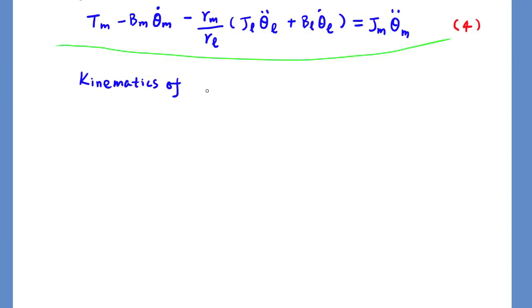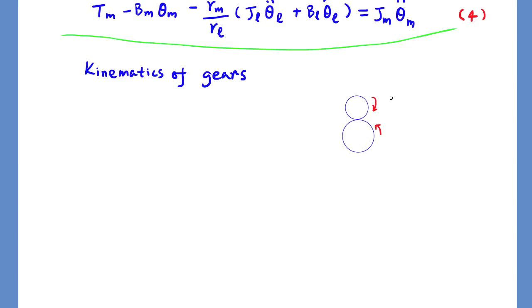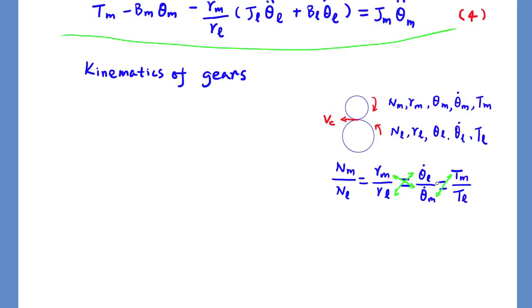Now, let's have a quick review on gear kinematics. Two rotational subsystems are coupled with a pair of gears. To have perfect mesh for gears, we have these relationships. The number of teeth is proportional to the radii of gears. And also, the linear velocity contact points are the same, so we have this relationship. Also, the power transmitted by the gear T times theta dot will be equal.